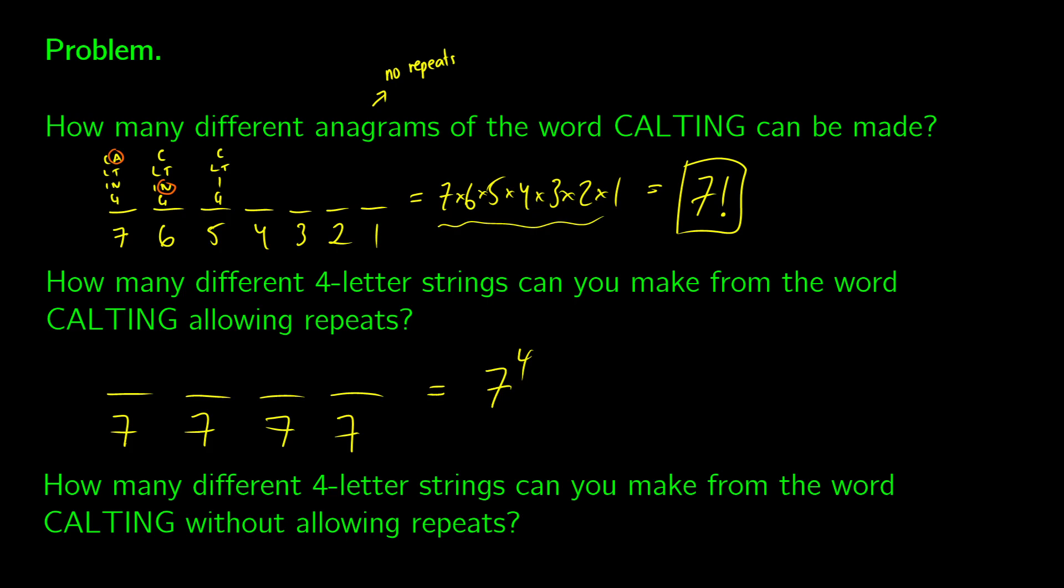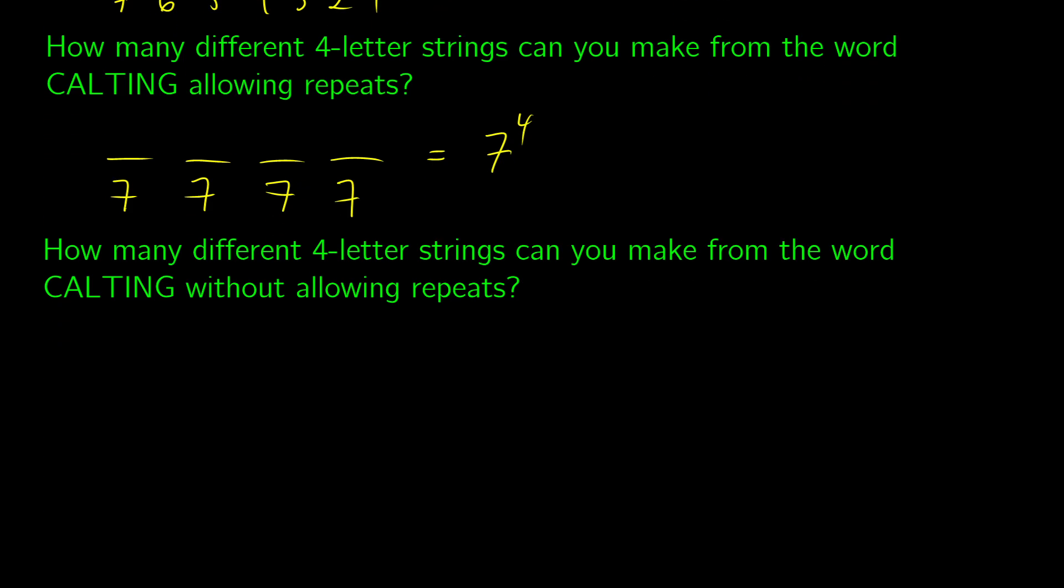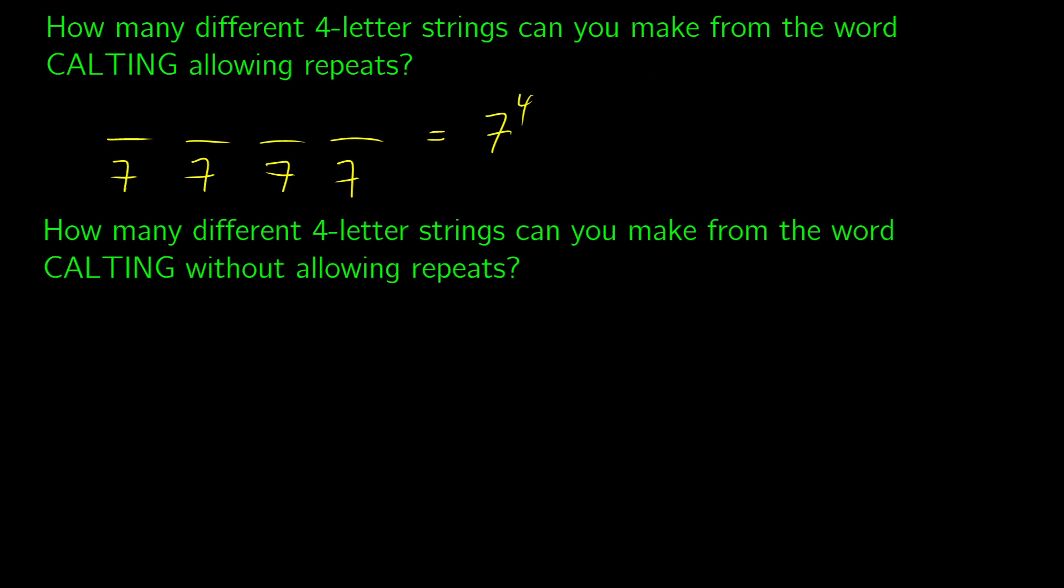Now let's contrast this by making four-letter strings of CALTING without allowing repeats. You see some cool factorial notation here. So we'll do it the same way as before. So first we have seven choices, but we can't have repeats. So for the second letter, we only have six choices. We're removing an option. We're going to have five choices and four choices. So this is seven times six times five times four.